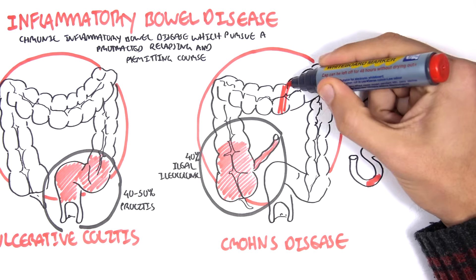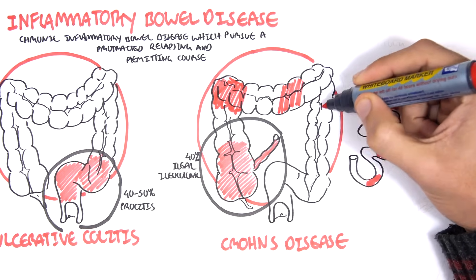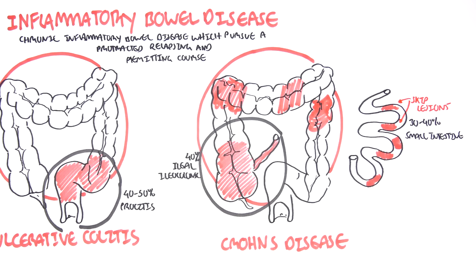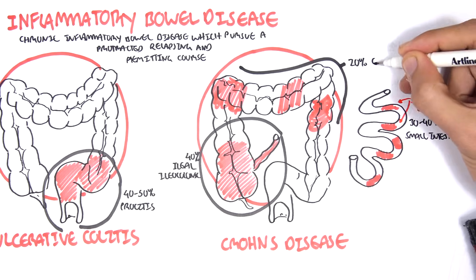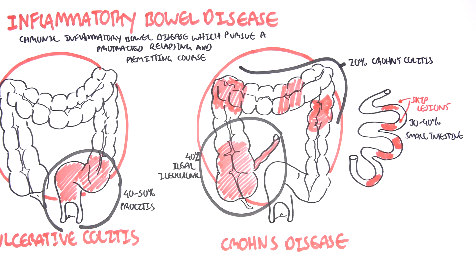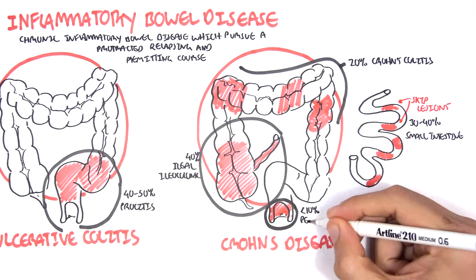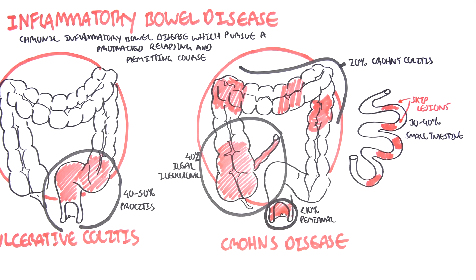Some people who have Crohn's can have skip lesions in the colon, the large intestine. 20% of Crohn's disease cases have this, and this is referred to as Crohn's colitis. Finally, a small proportion of cases have perianal inflammation.